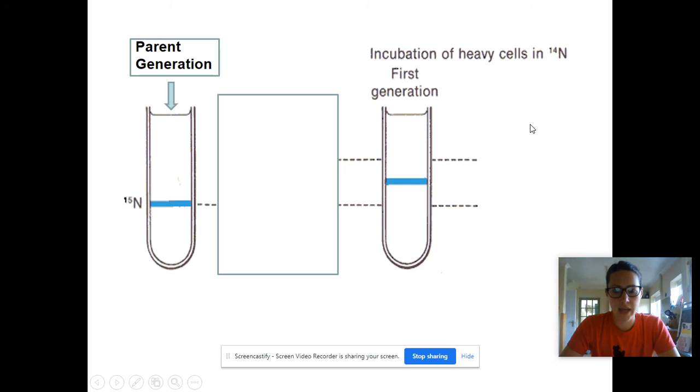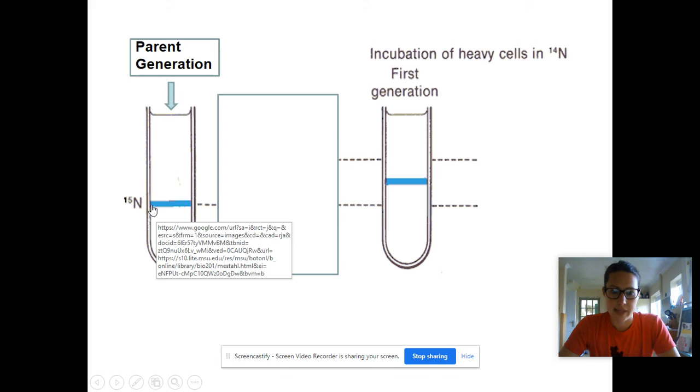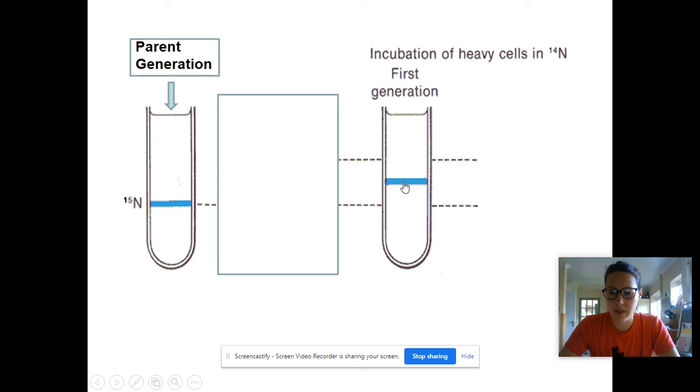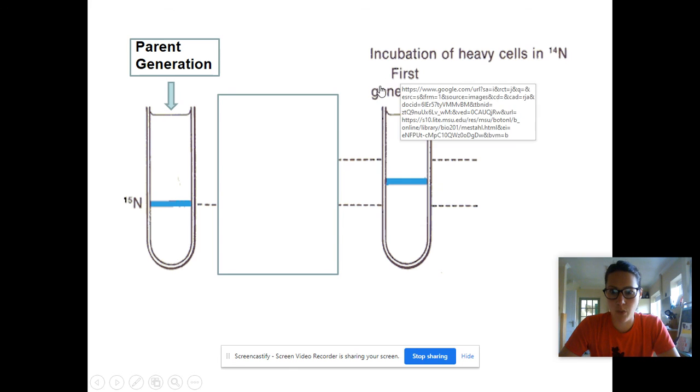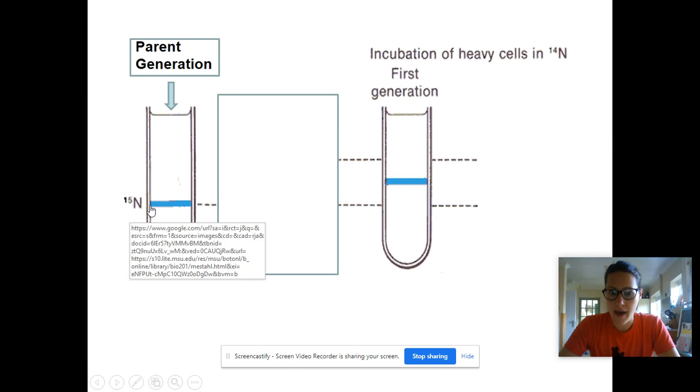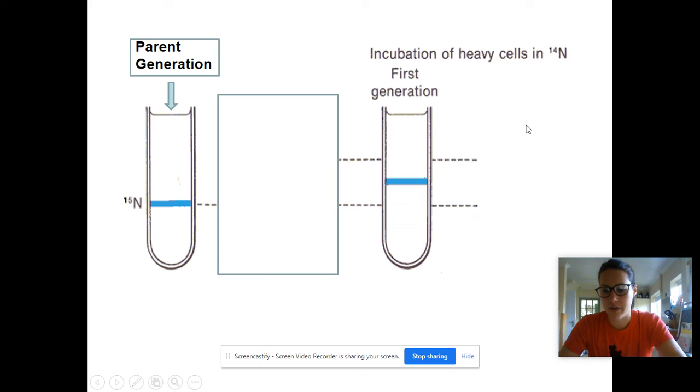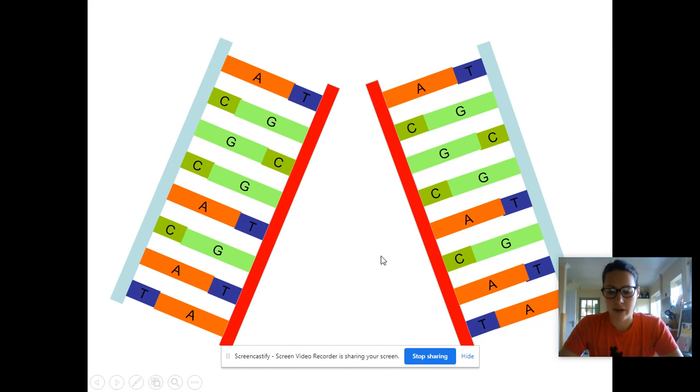And what you would then find, or what they did then find when they extracted that DNA and whizzed it up in a centrifuge, is actually when they compared to the controls, the band which appeared wasn't in the same place as the N15 band, it wasn't in the same place as the N14 band, but it was actually halfway in the middle, which suggested to Meselson and Stahl that the DNA which was being made after one generation was all half nitrogen-15 and half nitrogen-14, as we saw in this diagram here.